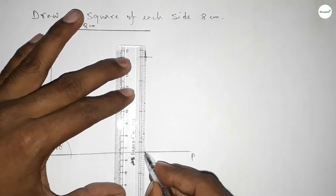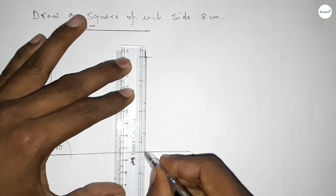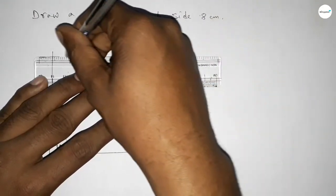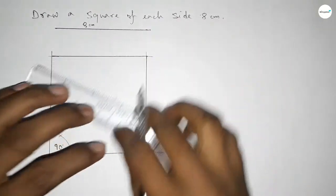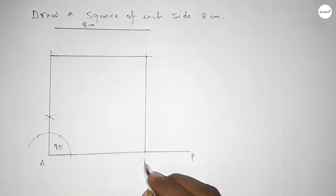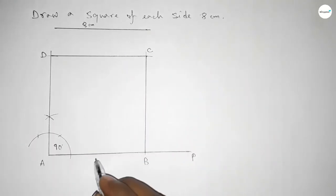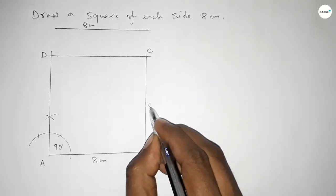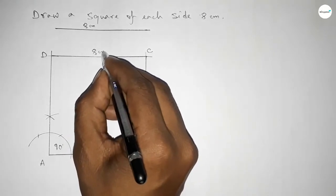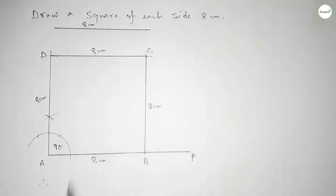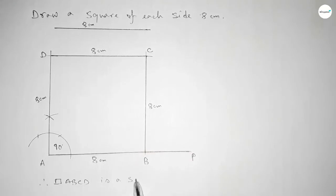Now joining this side, then joining this side. Taking here B point, here C point, and here D point. This side is 8 centimeter, this side 8 centimeter, this side also 8 centimeter, and this side also 8 centimeter. Therefore rectangle ABCD is a square of each side 8 centimeter.